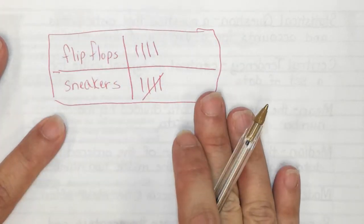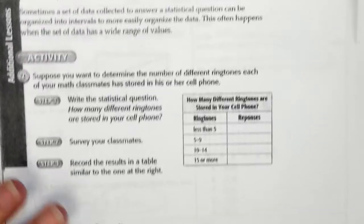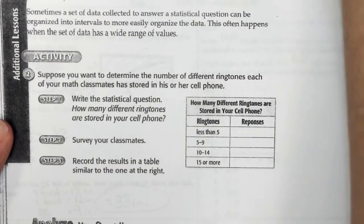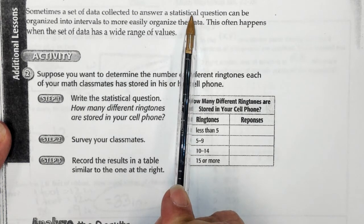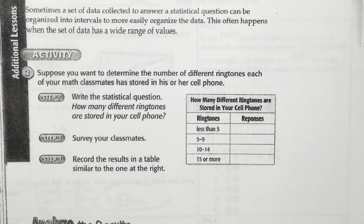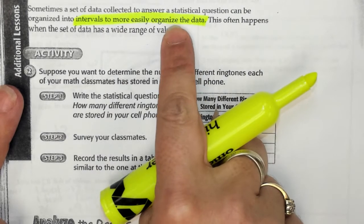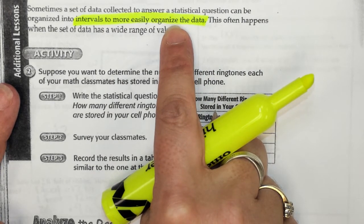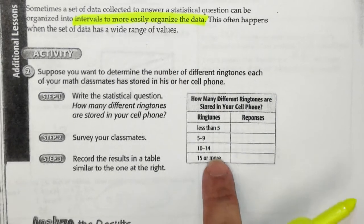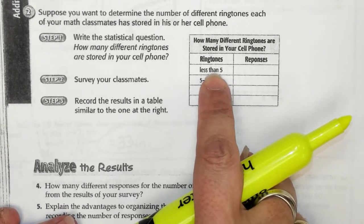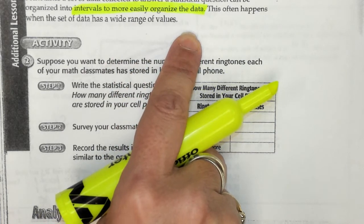Some questions are easy like that, but then there are questions based on intervals — meaning a set of numbers. Sometimes a set of data collected to answer a statistical question can be organized into intervals to more easily organize the data. We want to organize it and make it understandable. This often happens when a set of data has a wide range of values.